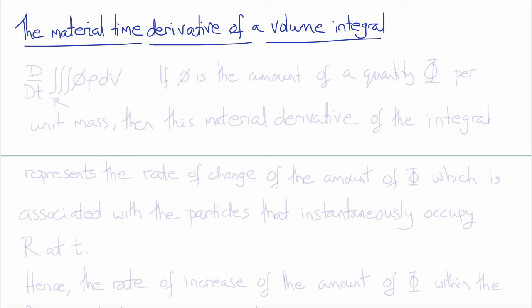We'll consider that this is the material time derivative of the volume integral of rho times a quantity phi. Phi is some sort of density of another quantity capital phi, where little phi is the amount of the quantity big phi per unit mass.